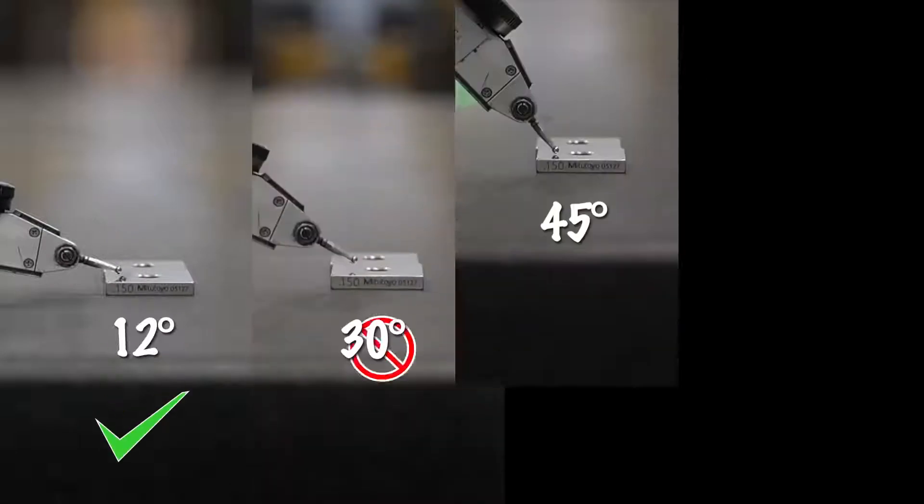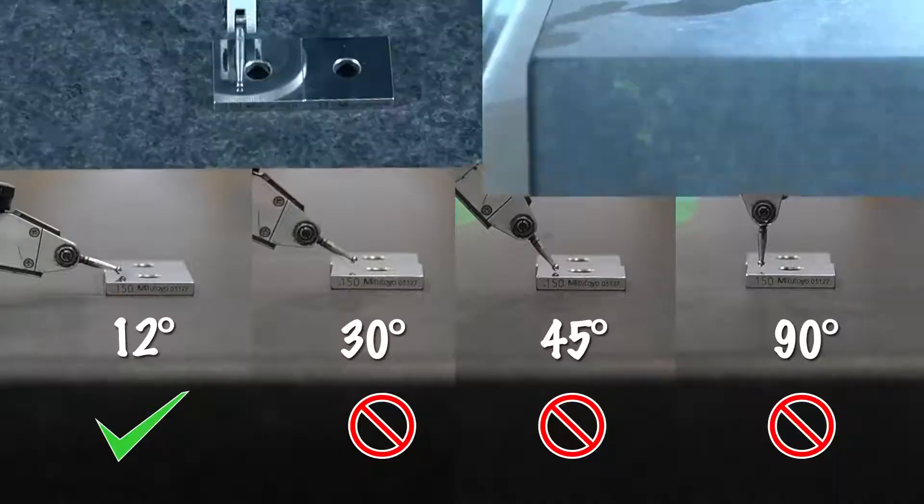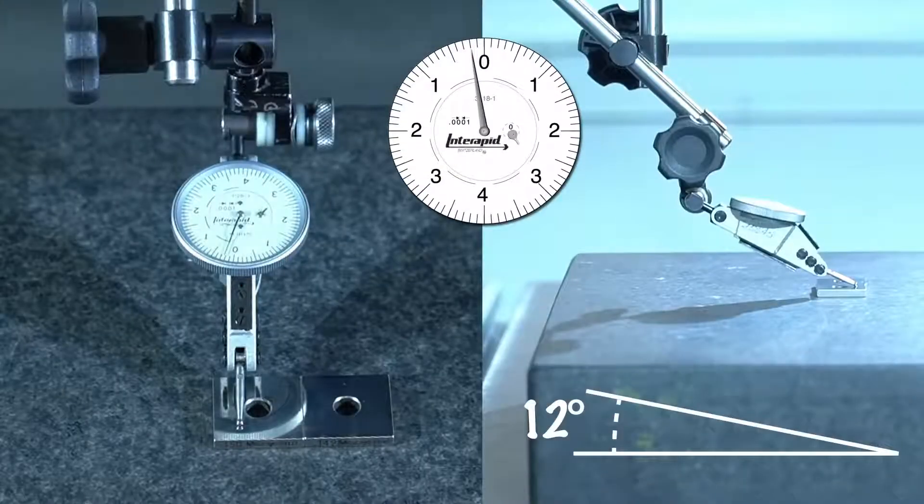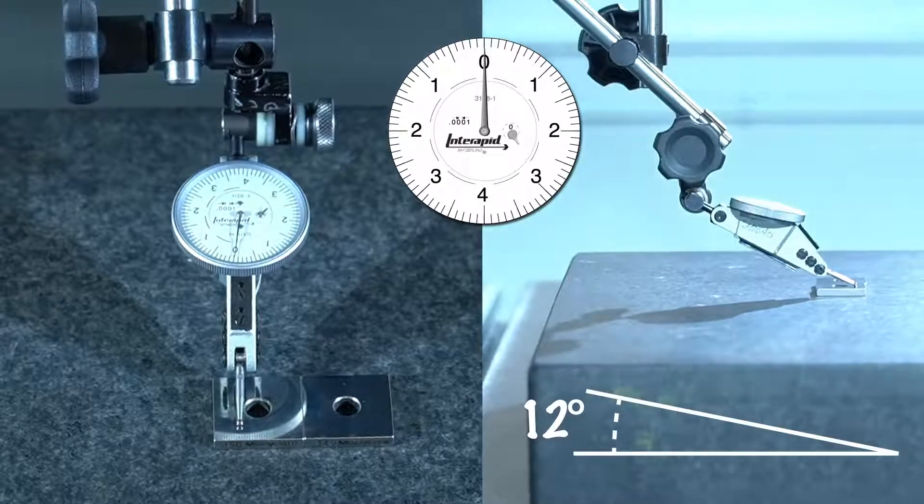To see the importance of setting this angle correctly, let's measure the same surface at different stylus angles. First, we'll set our indicator to 12 degrees, set it to 0, our reference position, on this accurate 0.15 inch gauge block.